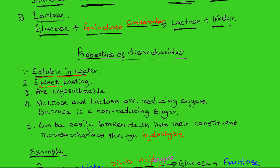Just like monosaccharides, disaccharides are sweet tasting, hence the term sugar — they are just as sweet as monosaccharides. Third, they are crystallizable, meaning they can be dried into crystals. Fourth, maltose and lactose are reducing sugars, meaning that when heated with Benedict's reagent, they will change the blue color of copper sulfate to the orange or brown color of copper(I) oxide.